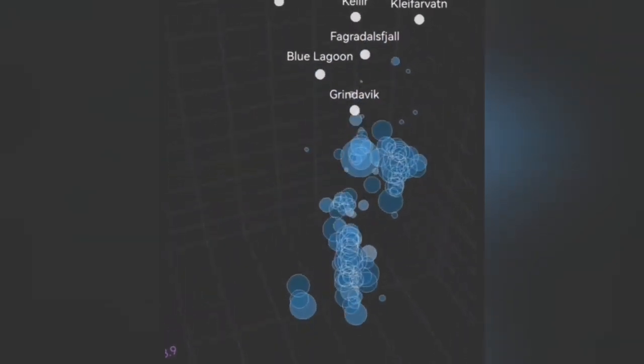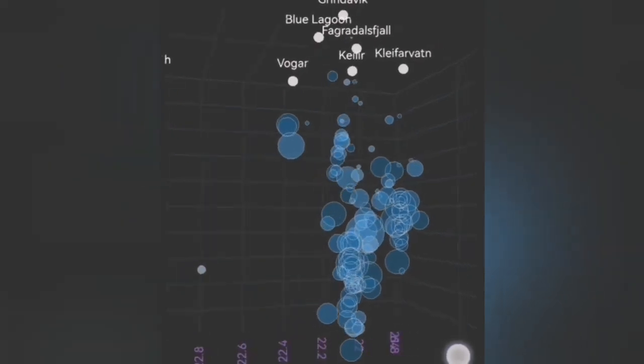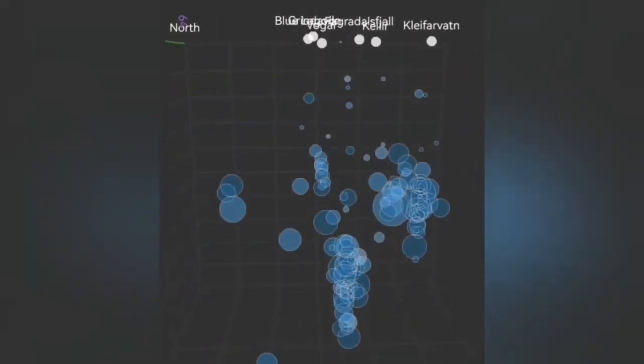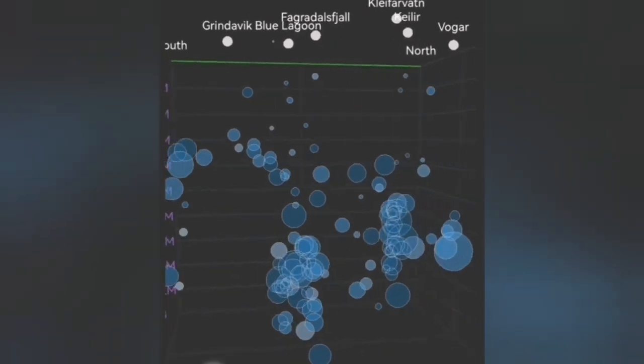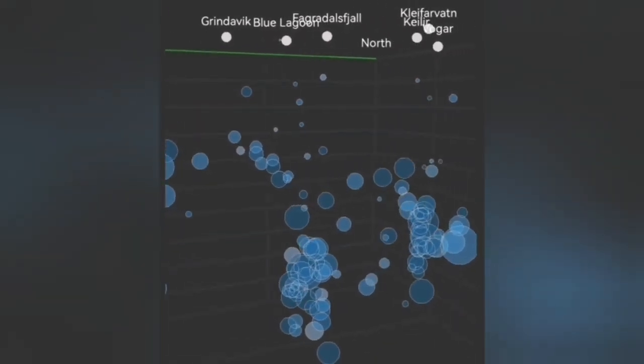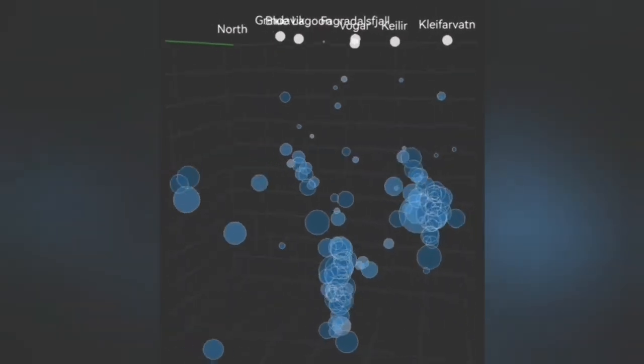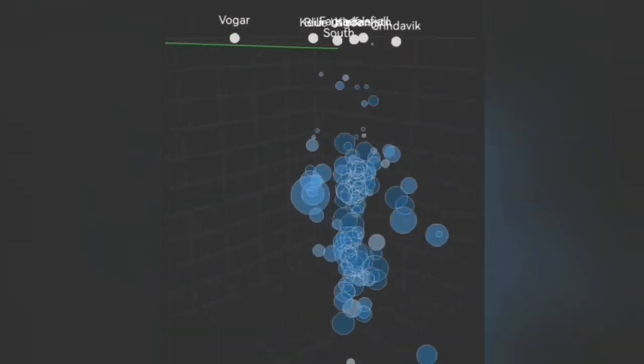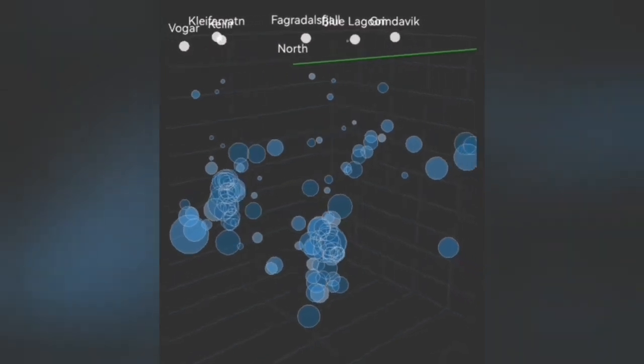For example, when I look at the earthquake depth chart, you can see a tongue of earthquakes at an angle moving from what is practically under Svartsengi toward Grindavik. We call it a transgressive sill in geological terms, a sill which has an angle and just rises gradually, but not vertically.